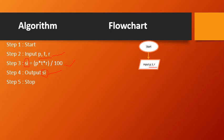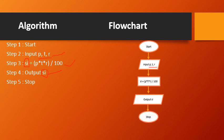Once we have taken the input, we need to process it. For processing, we use a rectangle — draw a rectangle and write the formula: SI = (P × T × R) / 100. Once simple interest is calculated, the next step is output, which is again represented by a parallelogram. Write 'Output SI' inside it. The last step is Stop, drawn within an oval. Each step written in the algorithm has a corresponding diagrammatic symbol in the flowchart.